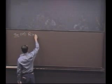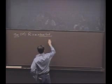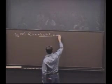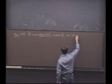R is an ordered field. It extends Q, and it has the least upper bound property.